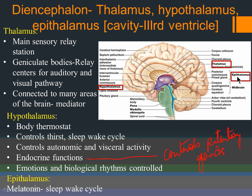The epithalamus contains a small gland called the pineal gland. The pineal gland secretes a hormone called melatonin, which is also sold in stores for sleep problems. Melatonin is responsible for the sleep-wake cycle — it is produced when it's dark, which is why you sleep when it's dark. When light comes, melatonin production decreases and you wake up.